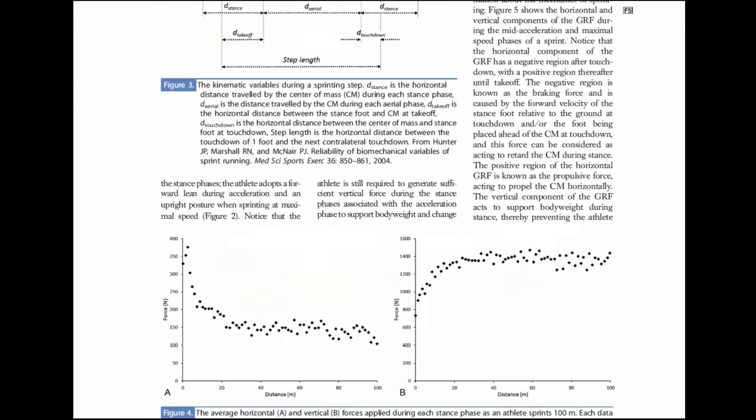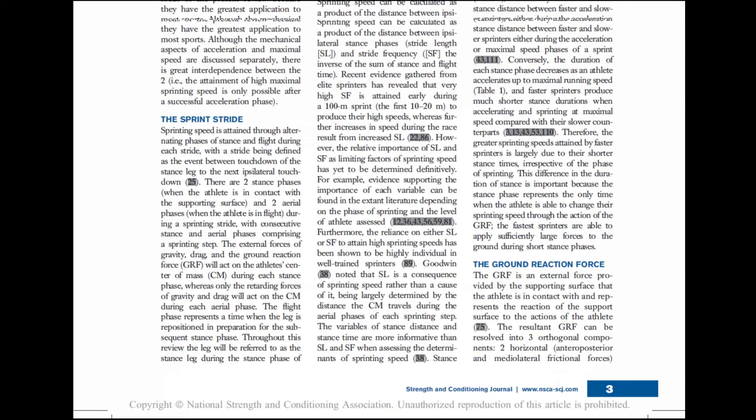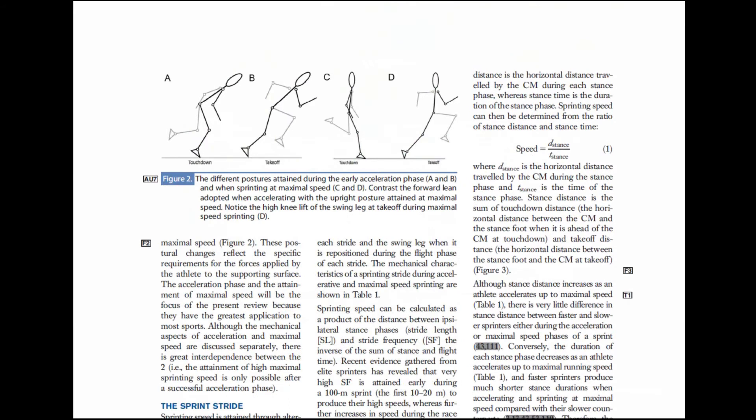Once the athlete is approaching their maximal speed and the mechanical limitation is now the ability to produce sufficient vertical force, the biomechanical solution used by the fastest athletes is the impact limb deceleration mechanism. If you look at the contralateral swing leg, notice that the swing leg is being swung forward and up so we get this high knee lift, these front-side mechanics that coaches talk about.